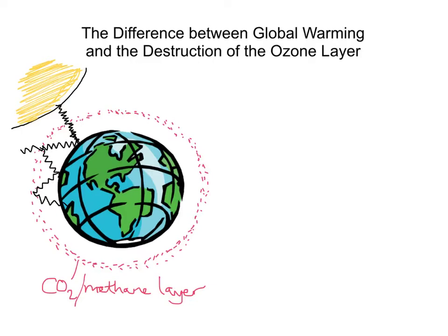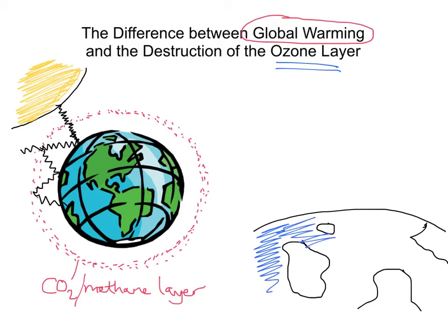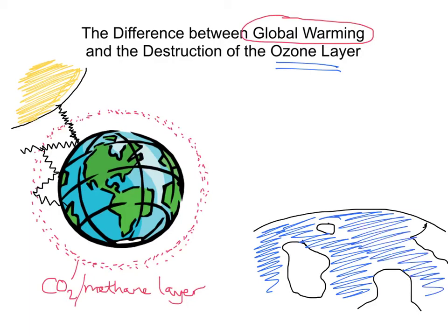Now that's different to the destruction of the ozone layer. So on this side we have global warming on the left. Now we're going to look at the destruction of the ozone layer, so I'm just going to draw a very rough sketch of the Earth — not to scale at all — just a very small section of the diagram to help explain it, with a bit of green for the land mass.